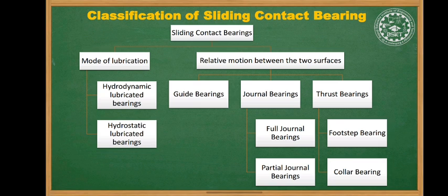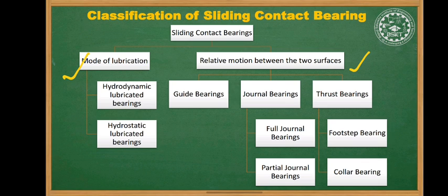Let's talk about the classification of sliding contact bearings. Sliding contact bearings are mainly classified into two major groups. The first group is sliding contact bearings according to the mode of lubrication, and the second is sliding contact bearings according to the relative motion between the two surfaces.